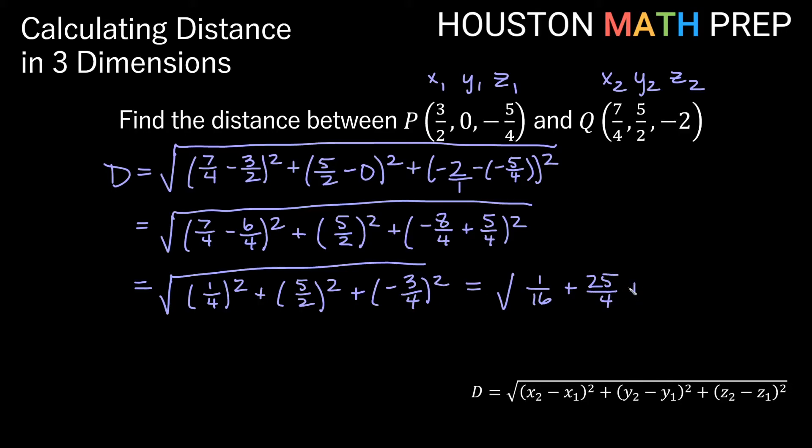So 1/4 squared will give us 1/16 plus 25 on top here and 4 on the bottom. Here the square of this negative is going to give us a positive. We'll get a 9 on the top and a 16 on the bottom. And you'll notice we still don't have a common denominator, so what I'll really need to do is go ahead and make this over 16 as well, this 25/4. So we'll go ahead and multiply by 4.